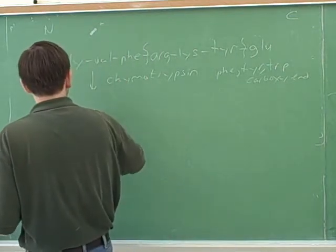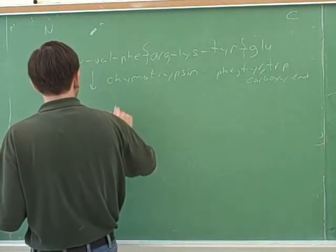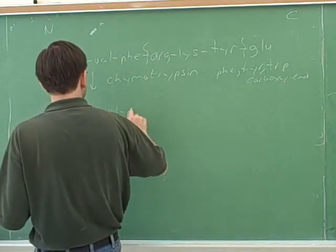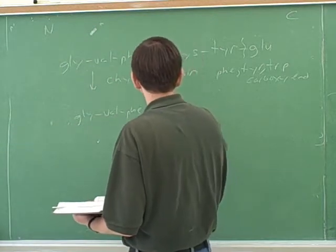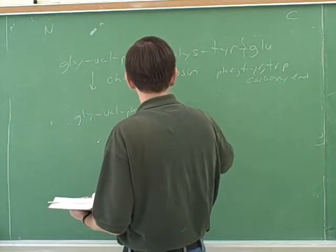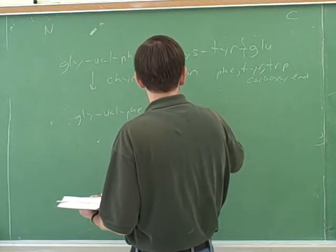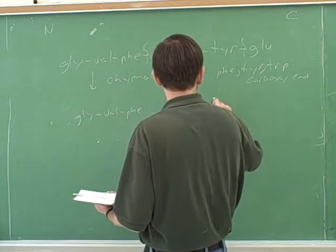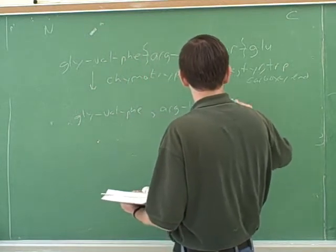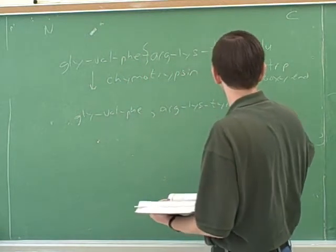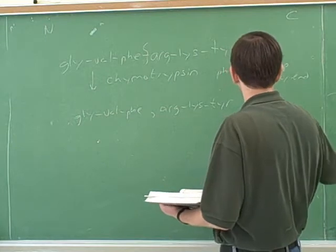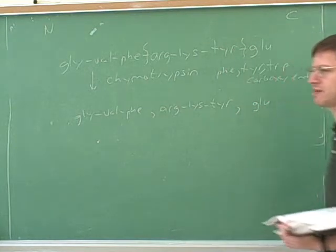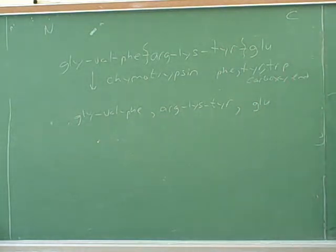So what are we going to get? We're going to get glycine, valine, phenylalanine — that'll be a tripeptide. We will get arginine, lysine, tyrosine — that'll be another tripeptide. And we'll get glutamic acid — a single amino acid.